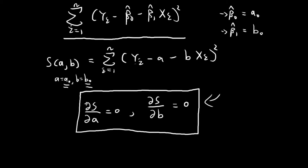It could be a maximum point or a saddle point. So you need to either graph this function or check a Hessian matrix to verify that the values of A and B are indeed a minimum point. I'm not going to go through that justification in this video — I'm just going to assume that this condition will give us the minimum point, and we'll use it to derive the estimates for beta 0 and beta 1.